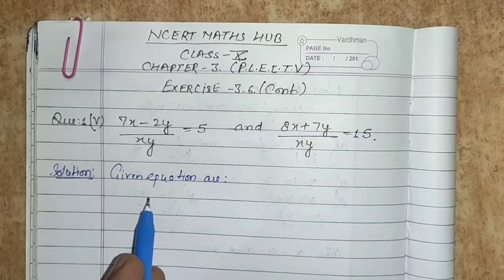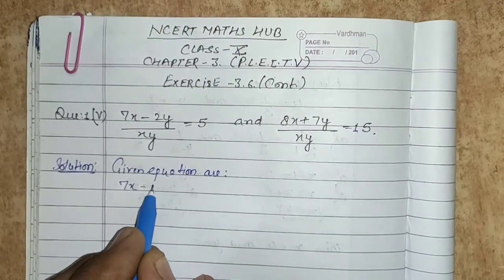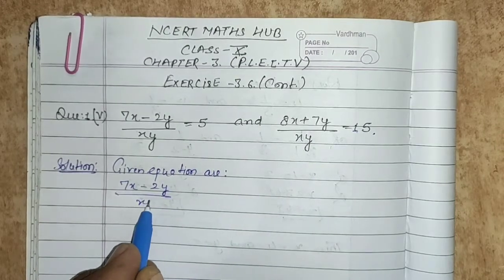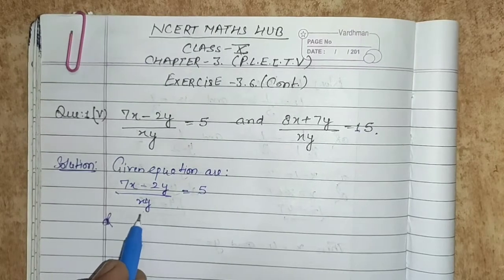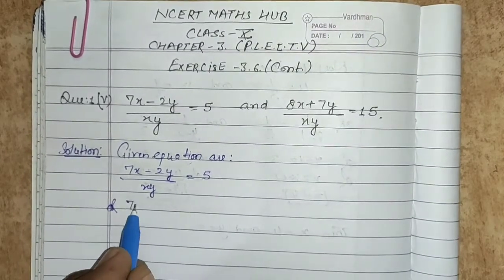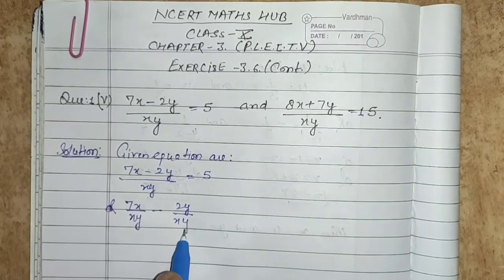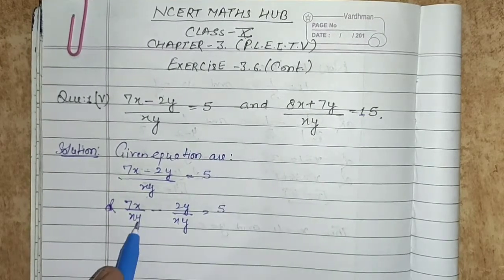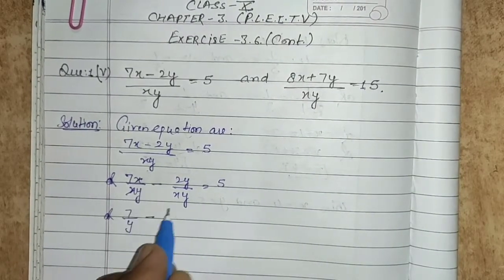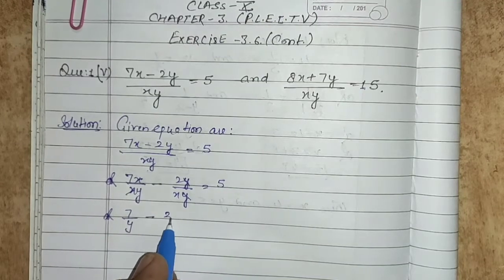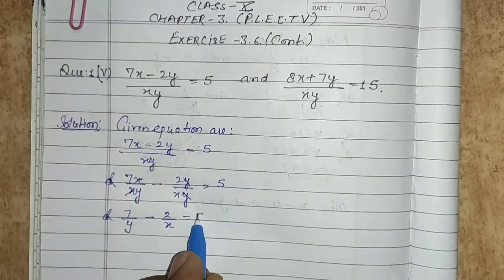The given equations are: 7x minus 2y upon xy equals to 5. We can split the xy in the denominator, so 7x upon xy minus 2y upon xy equals to 5. You can see x cancels here, giving 7 upon y, and y cancels there, giving 2 upon x. So 7 upon y minus 2 upon x equals to 5. This is equation number 1.